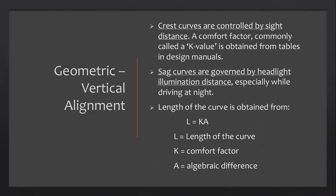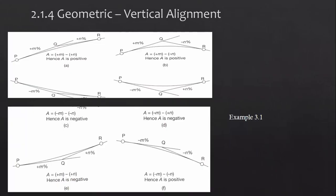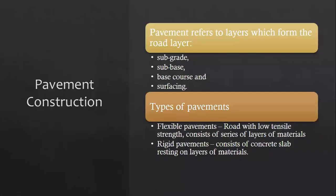Crest curves are controlled by sight distance — if you have a hill, the only thing that controls your alignment is how far your car can see. A sag curve is controlled by how far your headlights can shine so you can see at night. The length of the curve is obtained from the formula: L = K × A, where L is the length of the curve, K is the comfort factor, and A is the algebraic difference in grades.